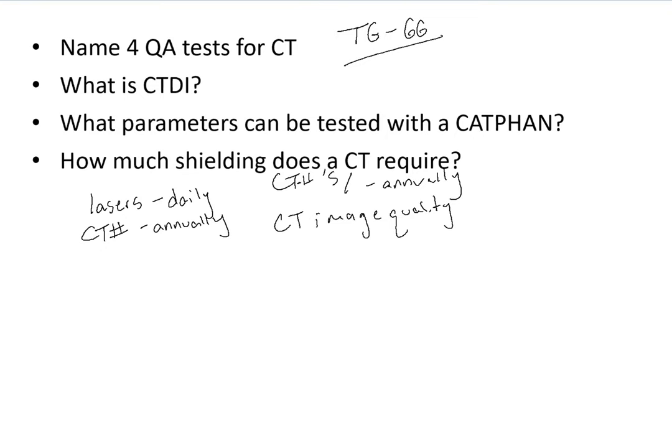So what is CTDI? Ultimately, CTDI is the integrated dose along the Z-axis for a single axial scan — essentially, what is the dose for one axial scan? You're going to want to check this annually. The tolerance is plus or minus 20%, which sounds really high, but you have to consider you're using really low energy photons, and there is setup error and equipment error.